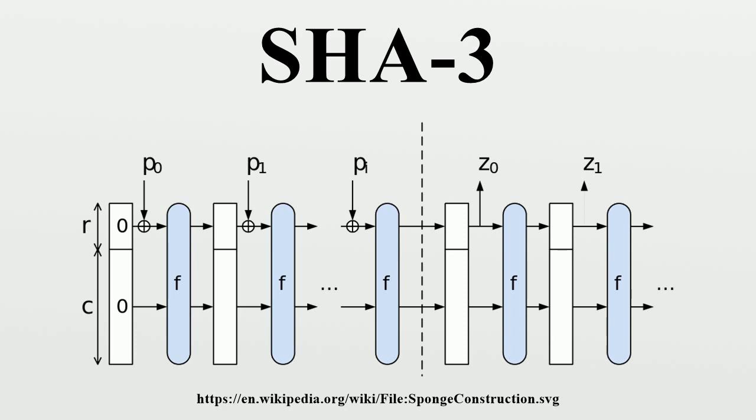Theta: compute the parity of each of the 5×w 5-bit columns, and exclusive-or that into two nearby columns in a regular pattern. To be precise, A[i,j,k] ← A[i,j,k] ⊕ parity ⊕ parity.